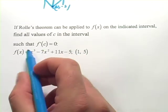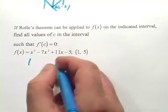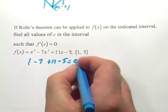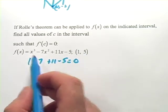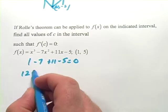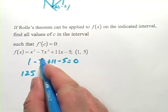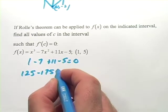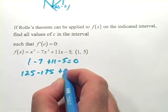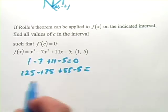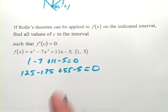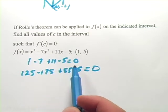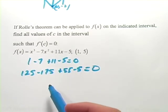We need to plug those numbers in to test if the endpoints of the function are actually equal — that's a precondition of Rolle's Theorem. Plugging in one: one cubed is one, minus seven, plus eleven, minus five — that comes out to zero. Plugging in five: five cubed is 125, minus seven times 25 is negative 175, plus 55, minus five — that also comes out to zero. So the endpoints have the same value. It's continuous and differentiable along that interval, so we can apply Rolle's Theorem.